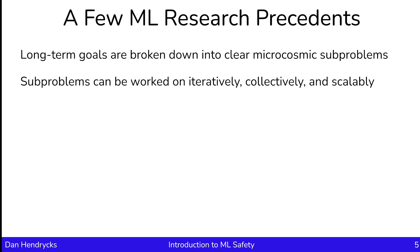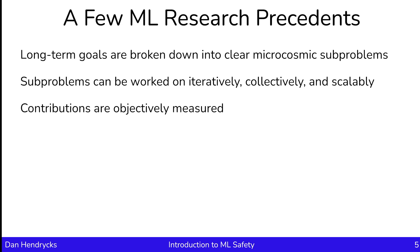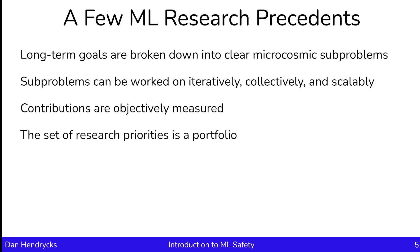ML researchers tend to work on subproblems that are addressable iteratively, collectively, and scalably — they're not trying to solve problems in one fell swoop. It's also the case that contributions are objectively measured. If a person improves performance on a benchmark, that means they did a good job. The worth of a contribution is not determined by high-status people alone. The set of research priorities is a portfolio — they're diversifying their bets rather than betting everything on the highest expected value research topic.